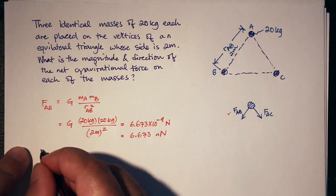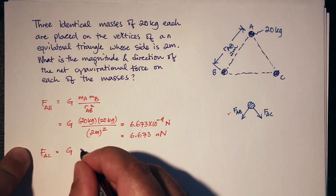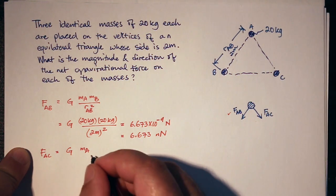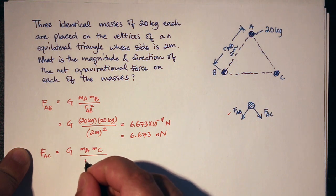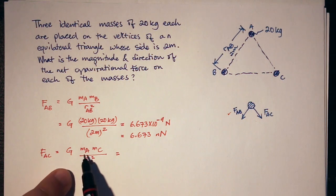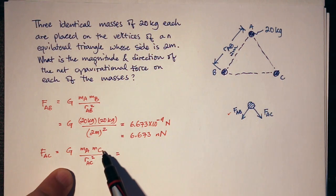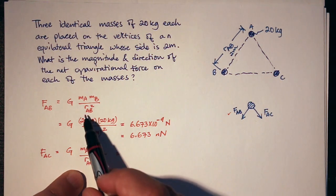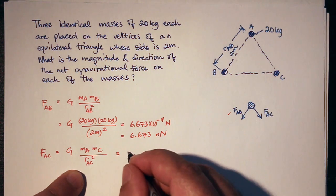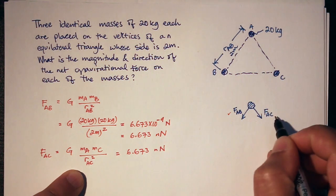Now for F_AC: it's G times the mass of A times the mass of C, divided by the distance between A and C squared. Since the distance between A and C is the same as the distance between A and B, this is going to come out to exactly the same answer — but it's going to have a different direction. I'll call this common magnitude F.